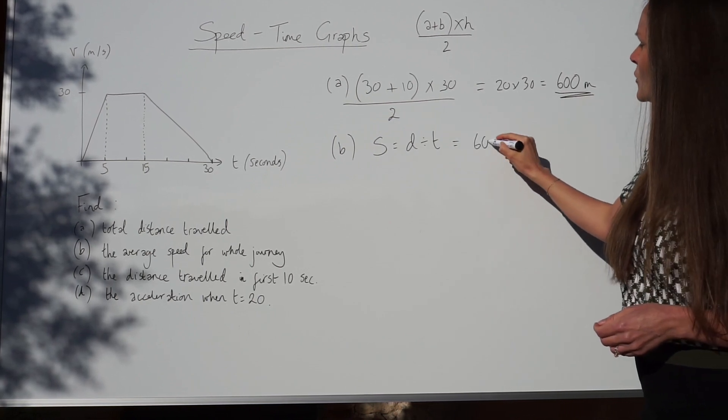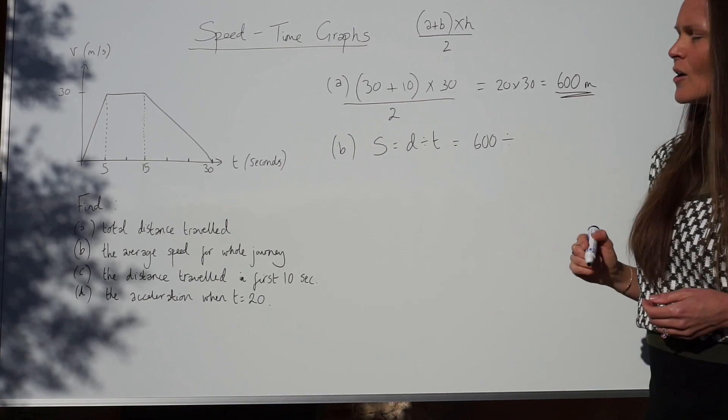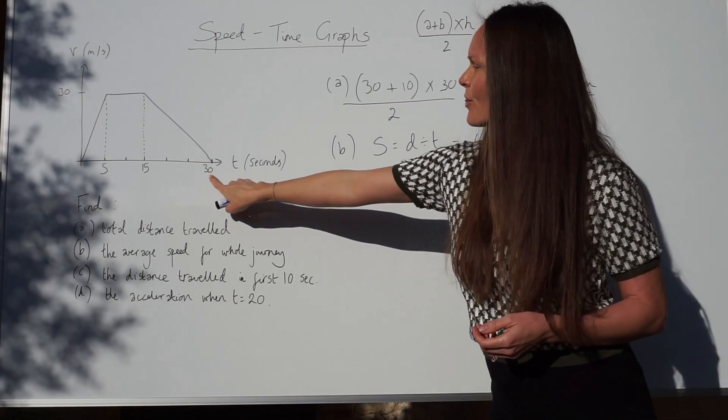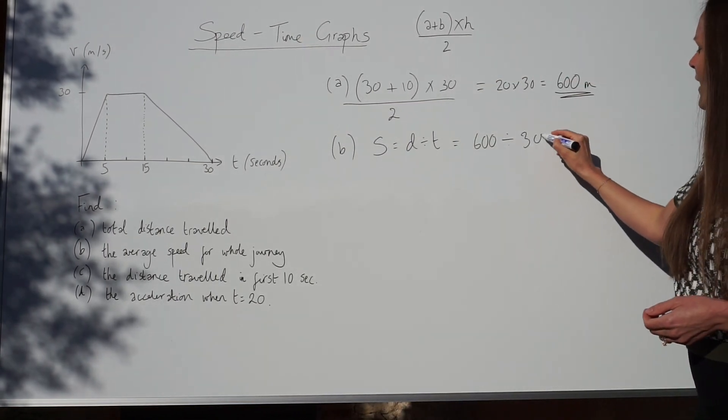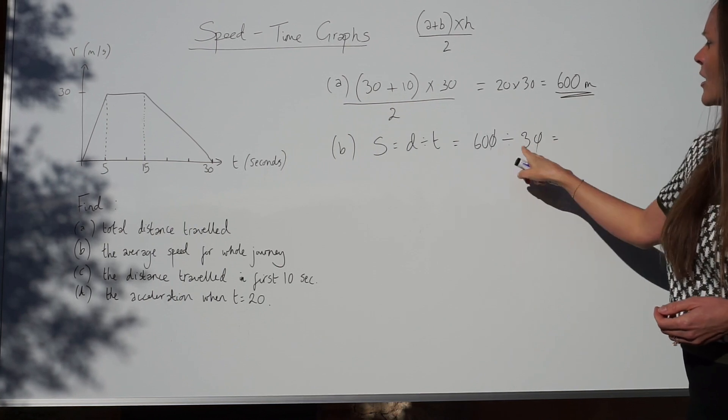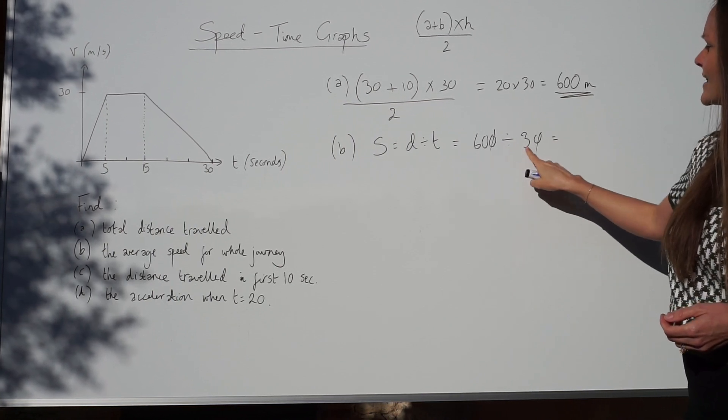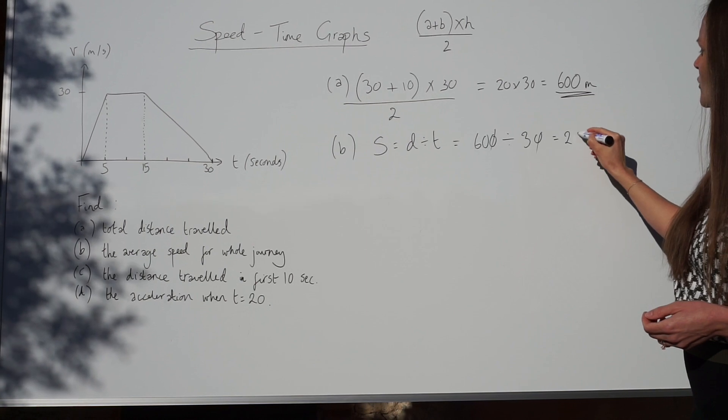So, you just divide your distance, 600, by the time, which is 30 seconds. If you divide those, the zeros cancel. And 60 divided by 3 is just 20.